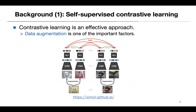As a background, contrastive learning is one of the most effective methods for self-supervised learning. We generate two views from an image by applying an augmentation, then we put the same samples closer and get different samples away. Therefore, data augmentation is an important factor for contrastive learning.